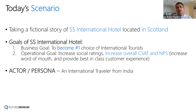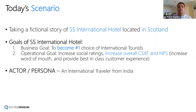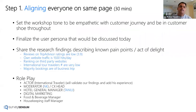Today's scenario: we're taking a fictional story of an 'Access International Hotel' located in Scotland. The hotel's business goal is to become the number one choice for international tourists. Operational goals include increasing social ratings, increasing overall CSAT and NPS, increasing word of mouth, and providing a best-in-class customer experience — achieving these operational goals will bring them much closer to becoming the number one choice.